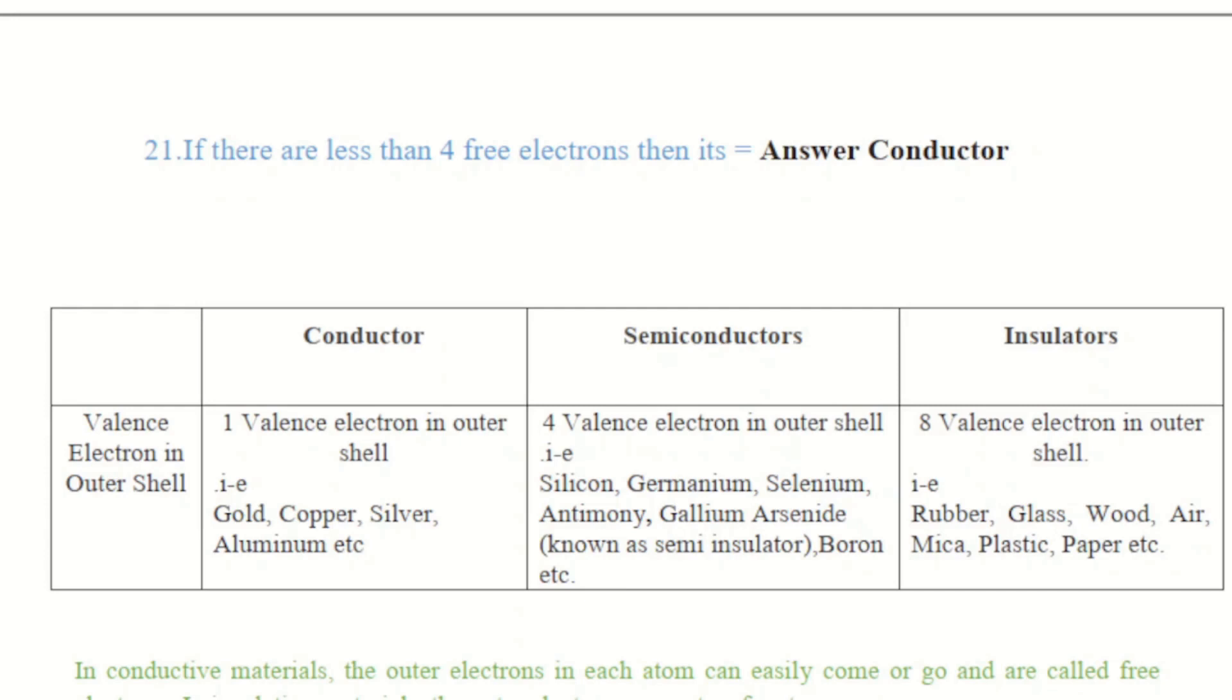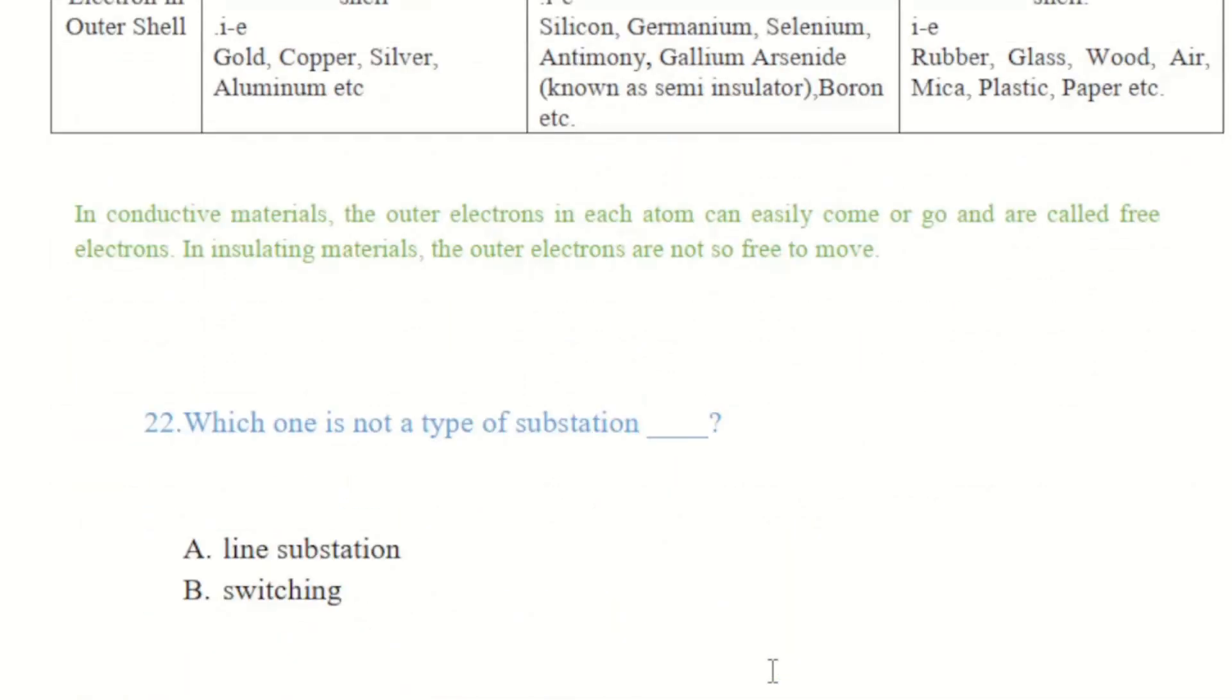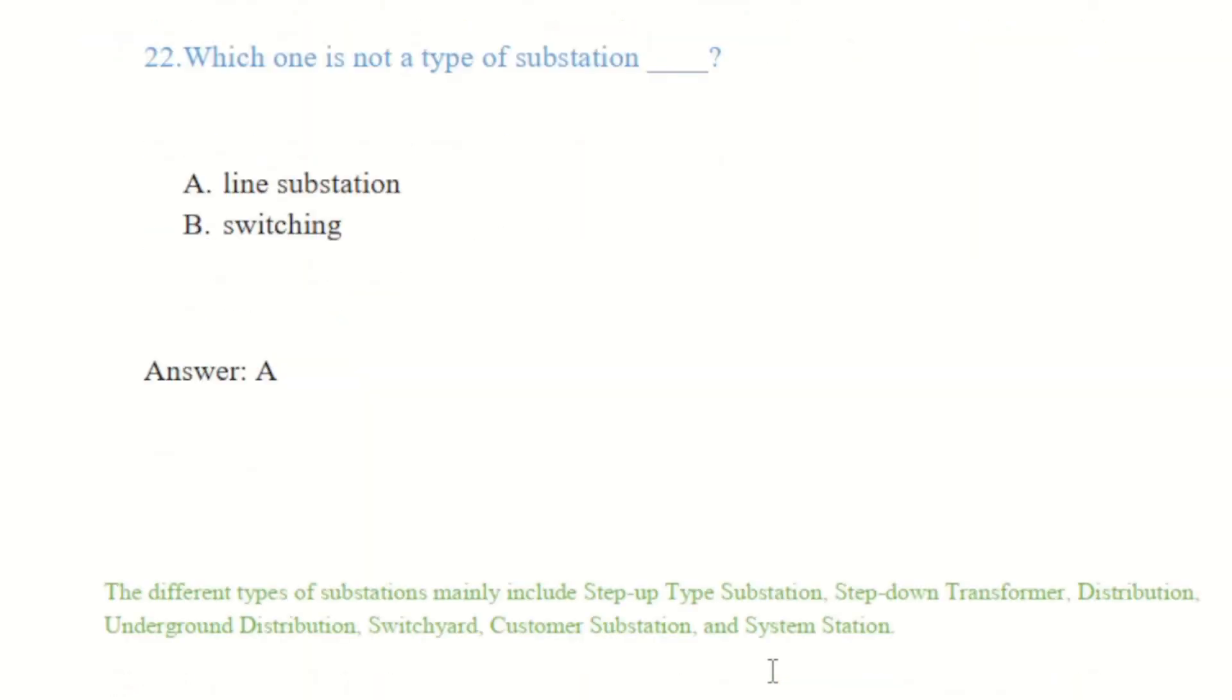In insulating material the outer electrons are not so free to move. Moving to question number 22, which one is not a type of substation? Basically there are two options given. A is line substation, number 2 is switching. The answer is line substation is not a type of substation.